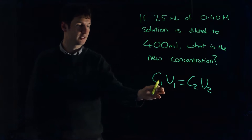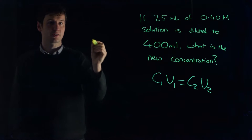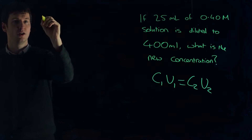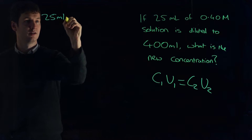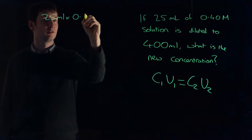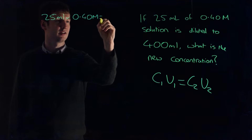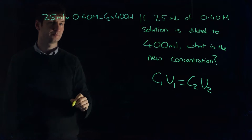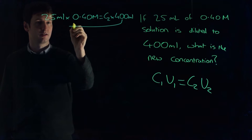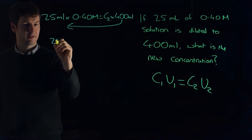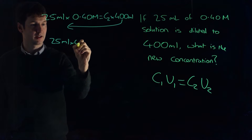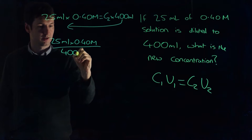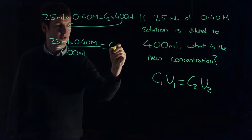Let's try that with this. We said that 25 milliliters of 0.4 molar solution is diluted down to 400 milliliters. What is our new concentration? So, 25 milliliters multiplied by 0.40 moles per litre is equal to concentration number 2 multiplied by 400 milliliters. Rearranging, we bring that down and get: 25 milliliters multiplied by 0.4 molar, divided by 400 milliliters, is equal to concentration number 2.